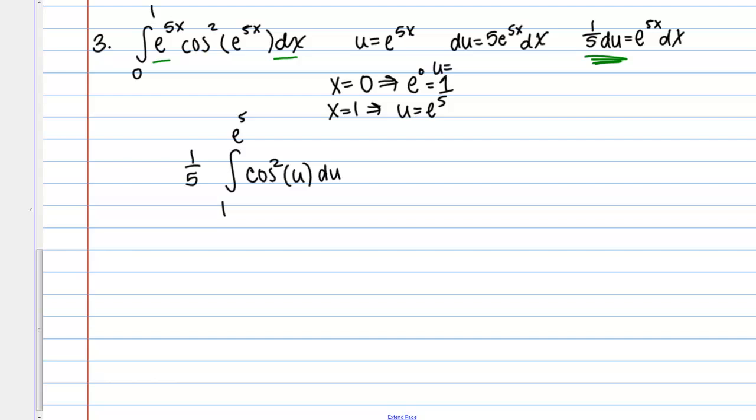And what you want to do here is use a trig identity. So I am simply going to use a trig identity to rewrite cosine squared of u. And that trig identity tells me that that equals 1 plus cosine 2u over 2.